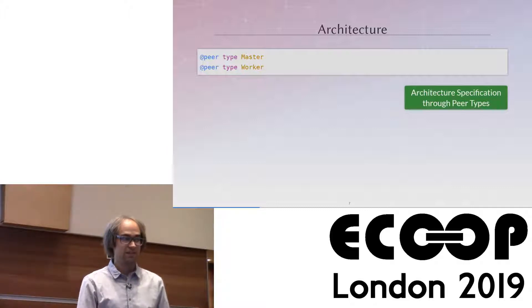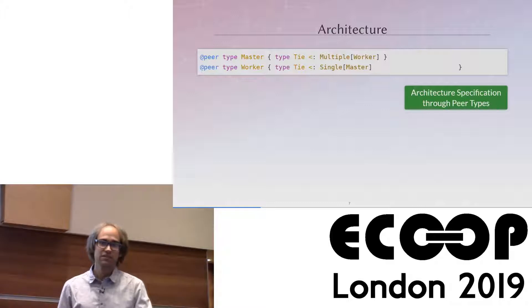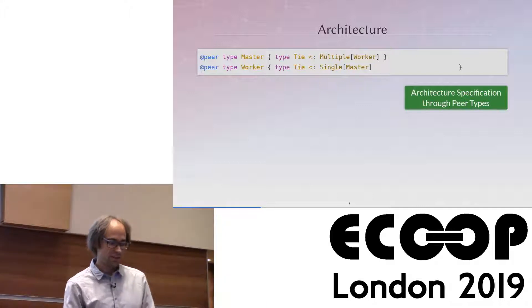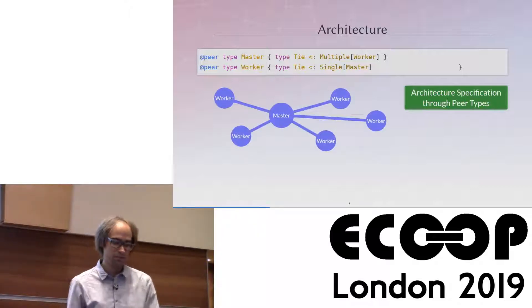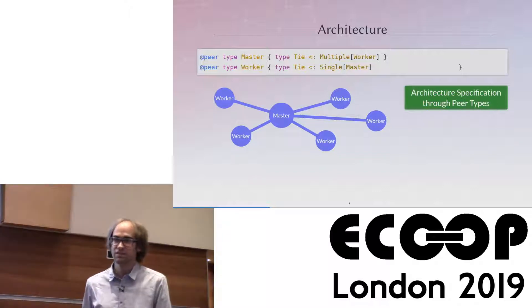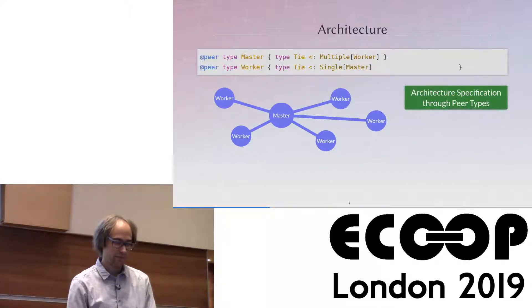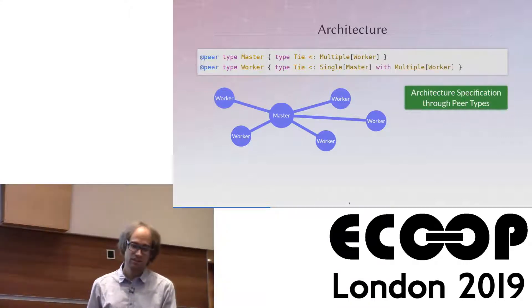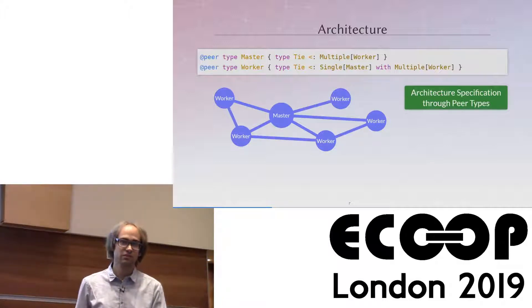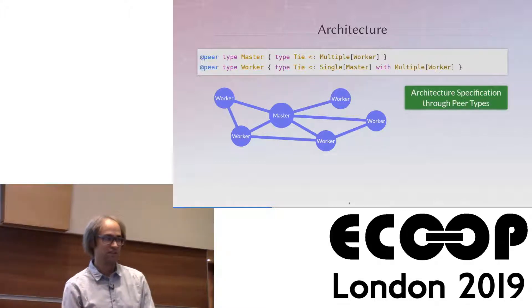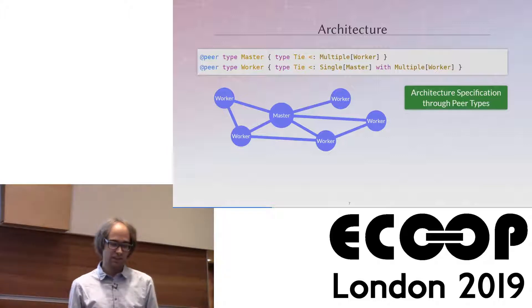Using the master and worker example, we can specify the distributed architecture using those peer types. The way we define the architecture is by specifying ties between peers. Since the architecture is encoded into the Scala type system, we specify ties using a tie type member. In this case the master has a 'multiple' tie to workers and the worker has a 'single' tie to the master. We can extend the specification so that a worker also has a 'multiple' tie to other workers, modeling an architecture where workers can additionally connect among themselves.